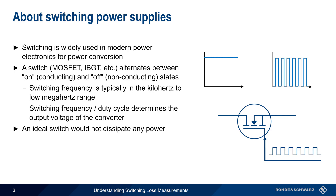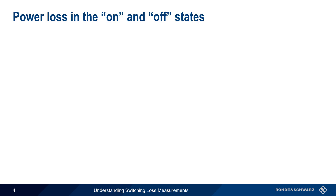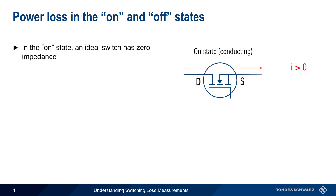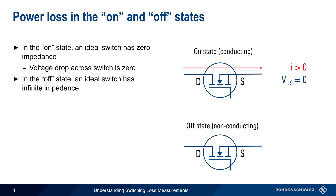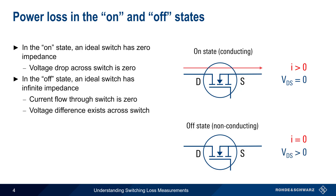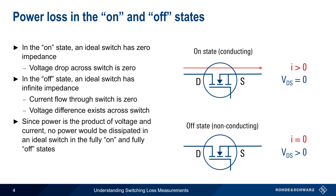An ideal switch would not itself dissipate any power — no power would be lost in the switch, and there would be no heat generated, because in the ON or conducting state, when current is non-zero, an ideal switch would have zero impedance and there would be no voltage drop across the switch. In the OFF or non-conducting state, the switch has infinite impedance, meaning that current flow is zero and a voltage difference exists between the terminals. Since power is the product of voltage and current, in both cases no power would be dissipated, because the product of voltage and current would be zero.